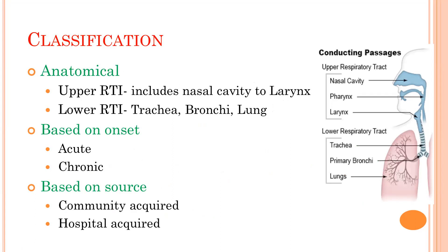Respiratory tract infection can be classified on three bases: anatomical, onset, and source. On the basis of anatomy, it can be upper or lower — upper includes nasal cavity, pharynx, and larynx; lower includes trachea, bronchi, and lungs. Based on onset, it can be acute or chronic. Upper respiratory tract infections are mostly acute, though some may be chronic like chronic otitis media. Based on source, it can be community-acquired or hospital-acquired.